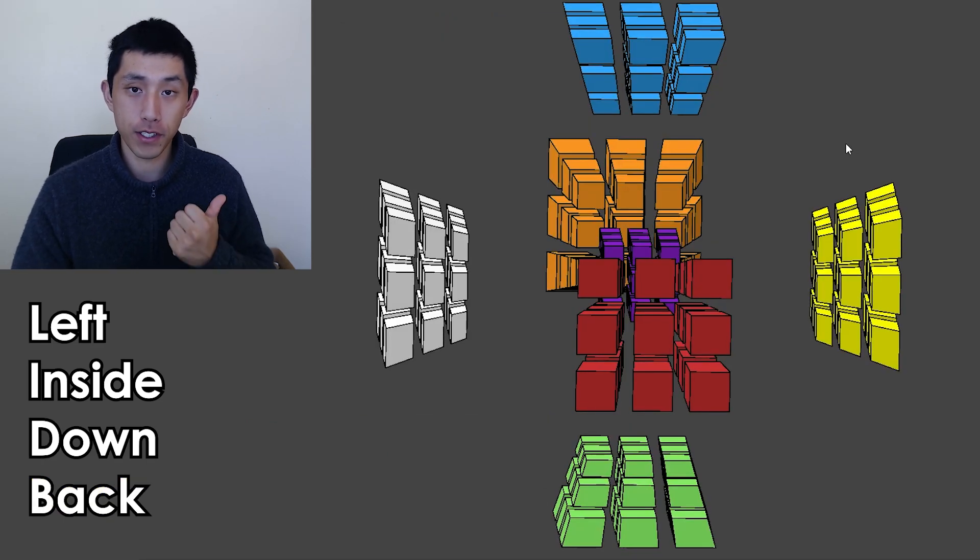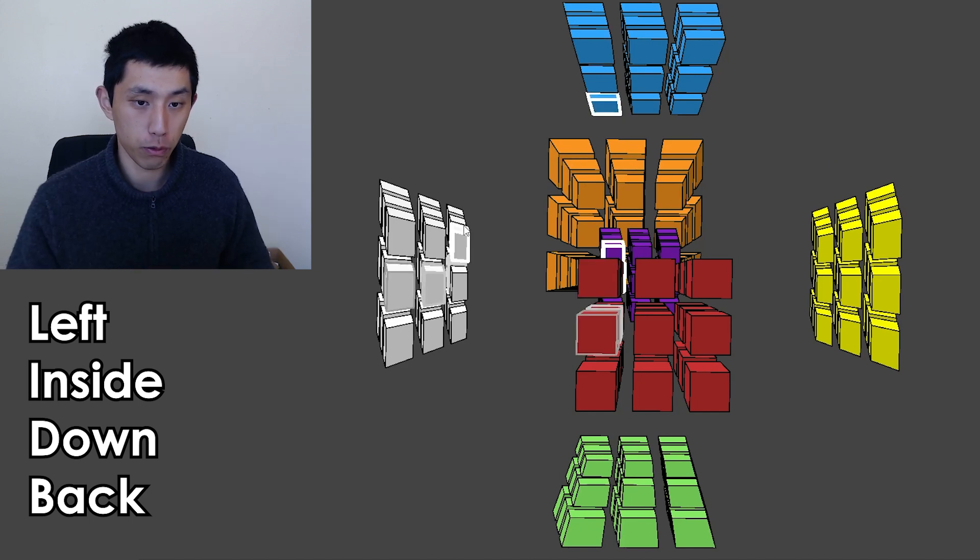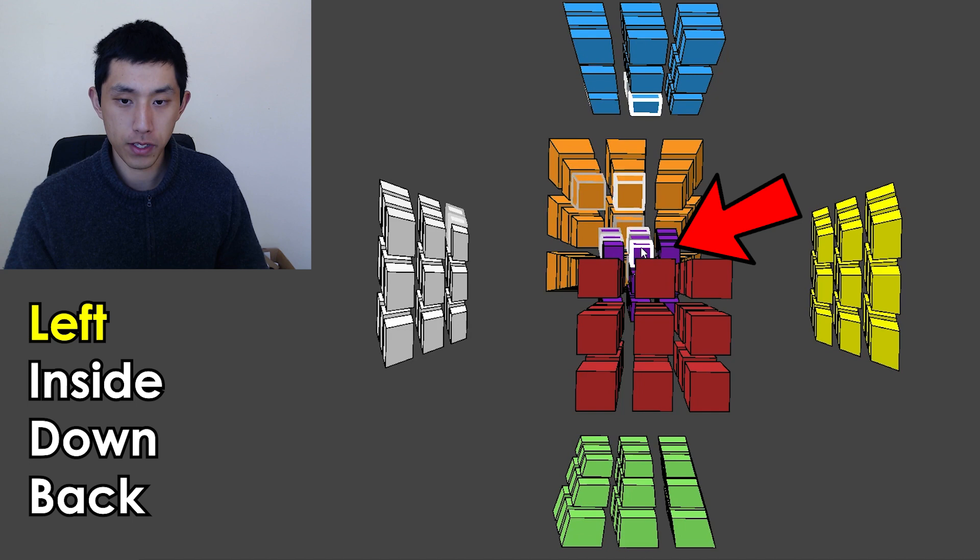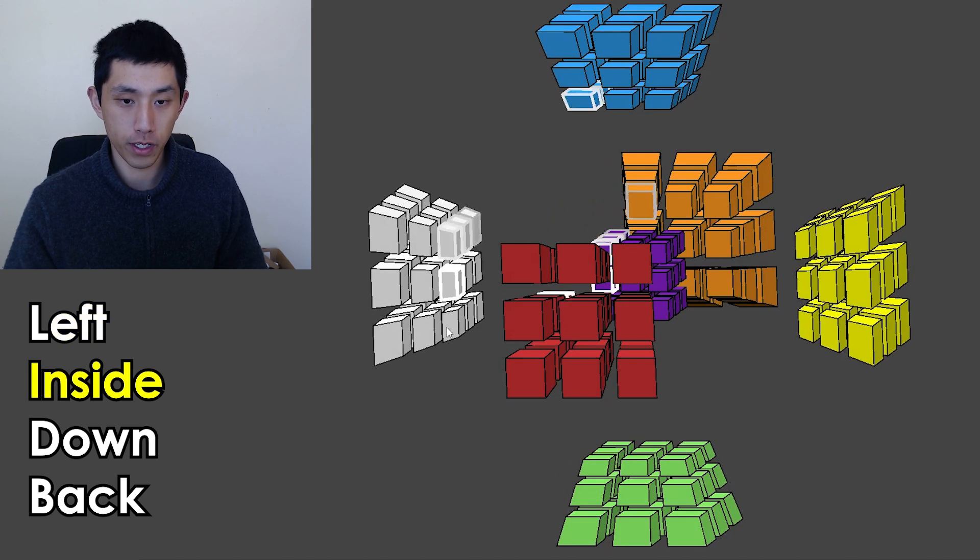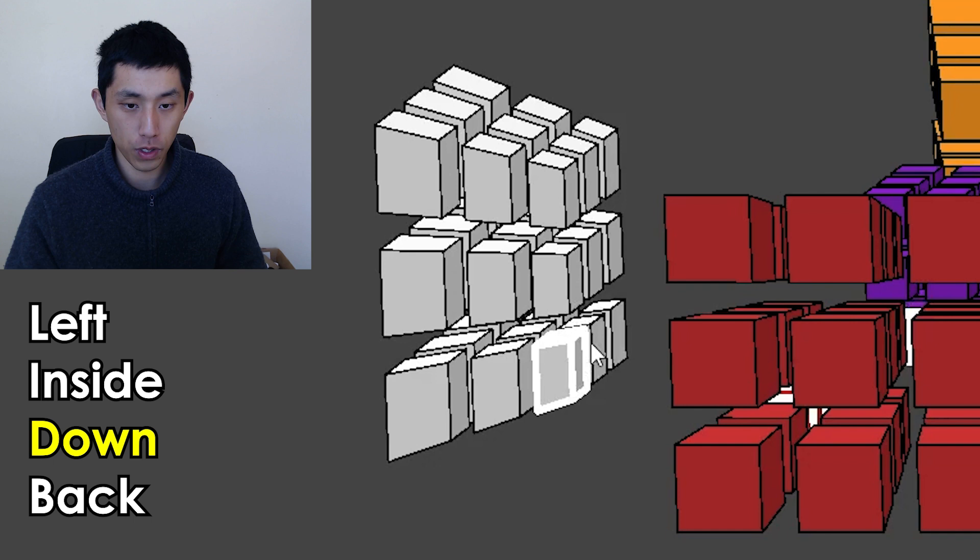Once again, pause the video to see if you can find the left inside down back sticker. So once again, we're talking about the left 3D cell, and then this is the inside cell. So reducing it down to the 3D face of stickers facing the inside cell, and then the 1D line on the bottom of that face, and then the 0D point on the back.